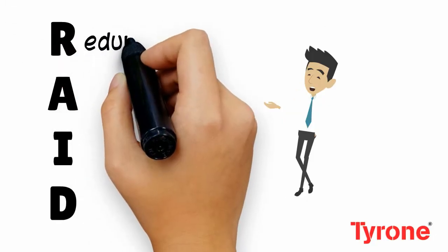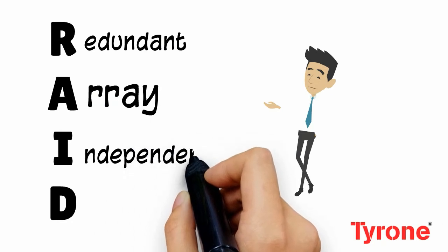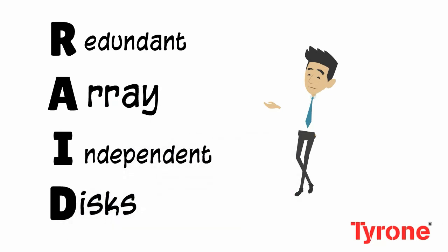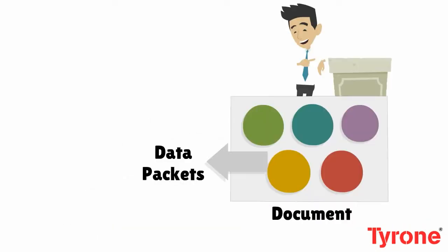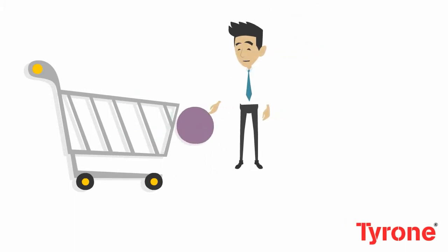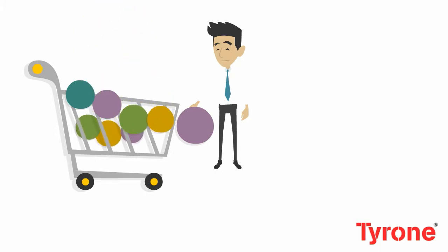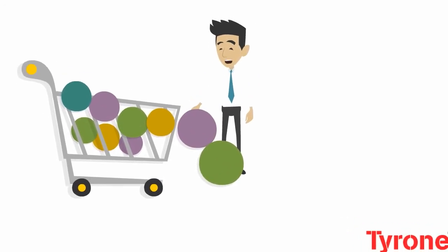Let's learn about RAID today. Let's assume that this packet of balls is a document and the colored balls are data packets. Now we store data packets in a disk drive, one by one. But what happens if we run out of space or if there is a natural calamity? We run the risk of losing our data.